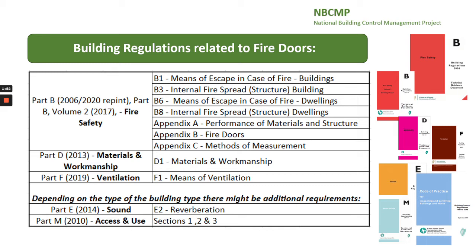B8 Internal Fire Spread Structure. Additional guidance is given in Appendix A Performance of Materials and Structure, Appendix B Fire Doors, and Appendix C Methods of Measurement. Fire doors also need to comply with Technical Guidance Documents Part D Requirement D1 Materials and Workmanship, and have to meet the requirements of Part F Ventilation, Section F1 Means of Ventilation.